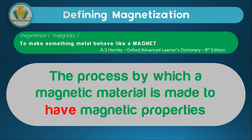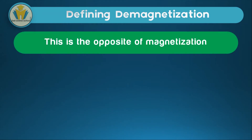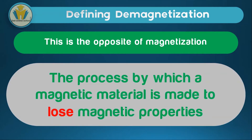These magnetic properties are properties every magnet portrays. If you want to know more about them, check our lesson or video under Basics of Magnetism. Demagnetization is just the opposite of magnetization — instead of having properties of a magnet, that material loses them. Therefore, demagnetization is the process by which a magnetic material is made to lose magnetic properties.